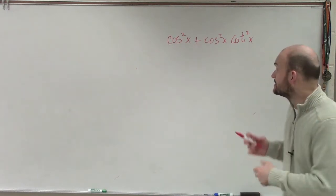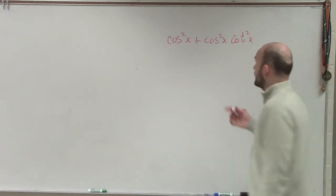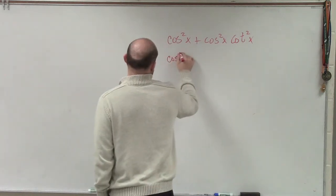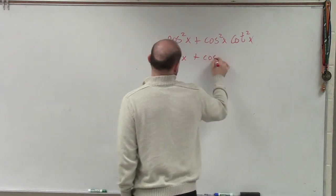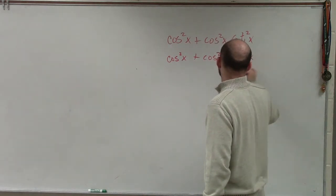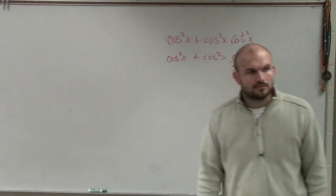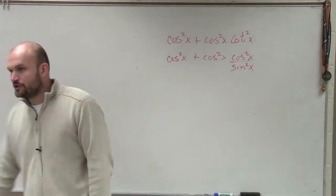Probably the first thing I would do is say, Ms. McLuhan always says convert to sines and cosines, right? So what I'd probably do is let me convert this cotangent squared to its quotient identity. I would probably do that first, convert it to sines and cosines.